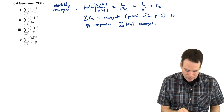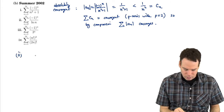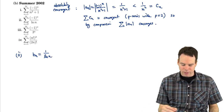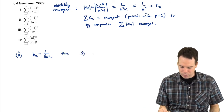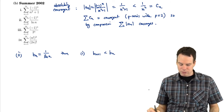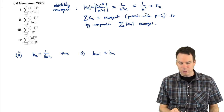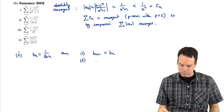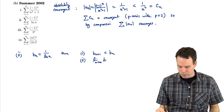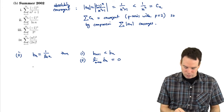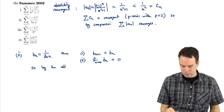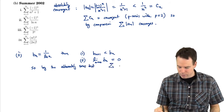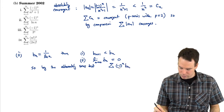How about the second example? Well, it's an alternating series. So I'm going to let b_n be 1 over ln(n). Then we have two things: the values are decreasing in magnitude — b_{n+1} is smaller than b_n because ln(n+1) is bigger than ln(n), so the reciprocal is smaller. Two, the limit as n goes to infinity of b_n equals 0. So by the alternating series test, the sum of (-1)^n · b_n converges.